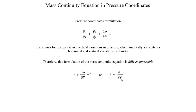You might wonder how this works out mathematically. A negative delta means convergent flow, which at the surface implies rising motion. Rising motion means w is positive but omega is negative. In d(omega)/dp: omega is negative (decreasing as you go upward), and pressure also decreases as you go upward, so dp is also negative. The two negative signs — one in the numerator, one in the denominator — cancel each other out.